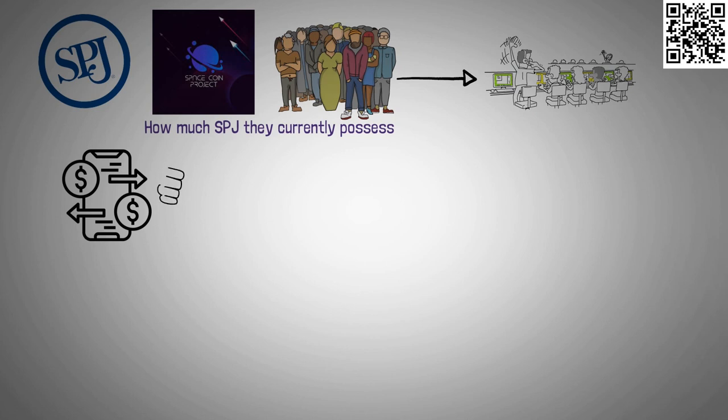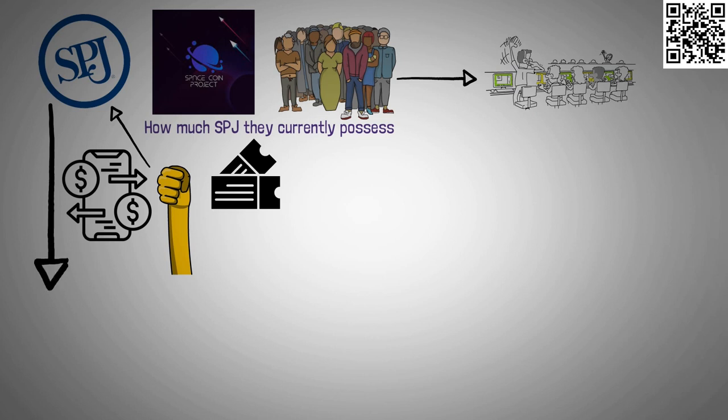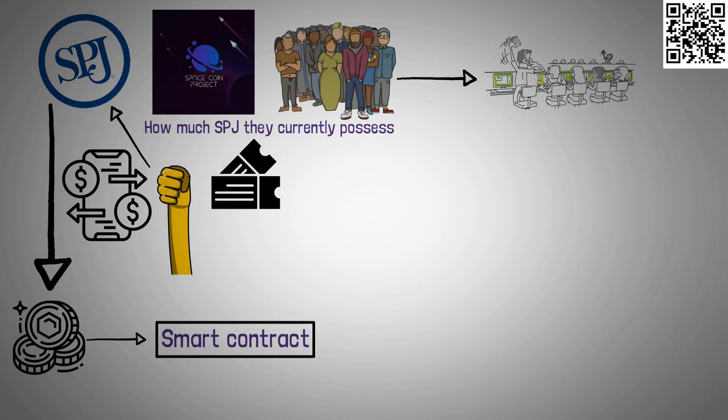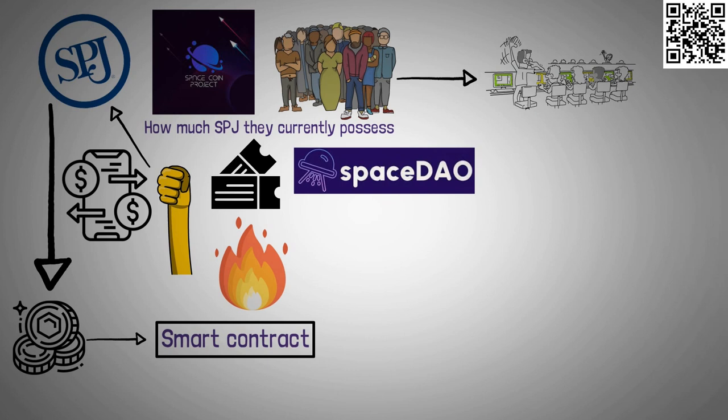Additionally, individuals who hold or stake a specific quantity of SPJ for a specific amount of time have a chance to win a ticket. When using SPJ, a user must transfer tokens to a smart contract that are equal to the cost of the ticket. After being burned, these tokens cause the Space DAO to release contract liquidity.